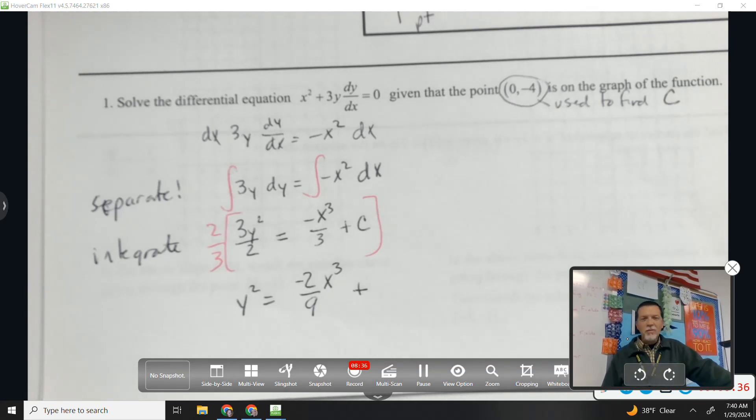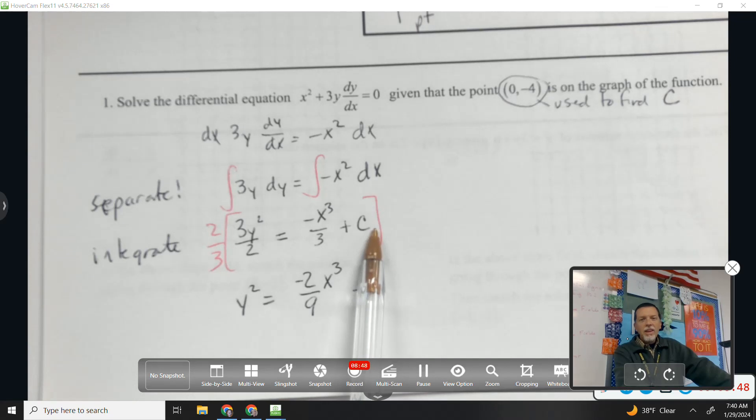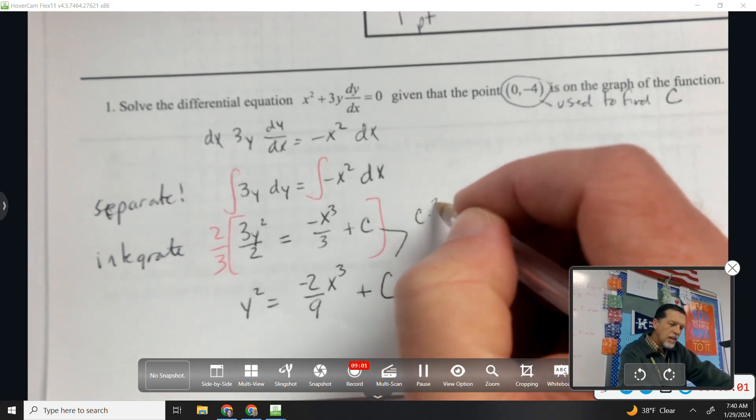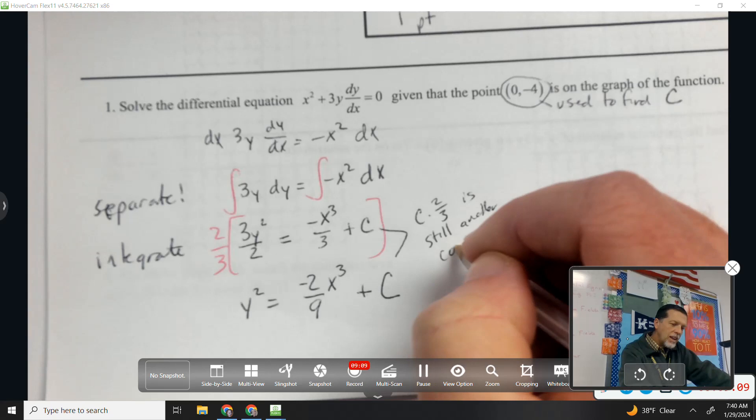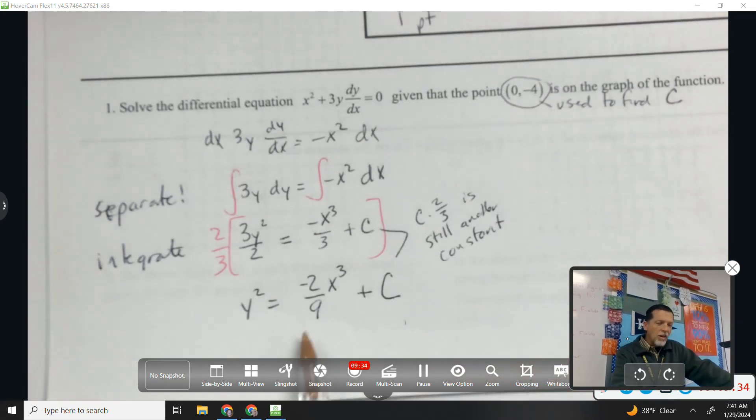And then here comes a little bit of a trick that bothers some people and some people like it. We have not solved for C yet. C can be anything right now because we haven't figured out what C is using that point. So C is anything we want it to be. If I multiply 2/3 by anything, it's still kind of just anything. So that looks a little funny. Those C's are not the same. It's any constant, and so if we multiply by 2/3, it's still just another constant. Now that bugs some people enough that they start putting subscripts on their C's. If it really bugs you, you can put a subscript on one of them to sort of indicate maybe to yourself more than anything, hey, those are not the same. But it doesn't matter yet because we haven't solved for C. When we plug this point in, it'll be really important, but for now we can just roll with that.